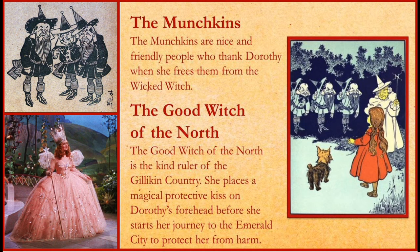The Munchkins are nice and friendly people who thank Dorothy when she frees them from the Wicked Witch. The Good Witch of the North is a kind ruler of the Gilligan country. She places a magical protective kiss on Dorothy's forehead before she starts her journey to the Emerald City, to protect her from harm. She is a good witch who always helps Dorothy.